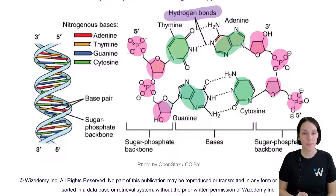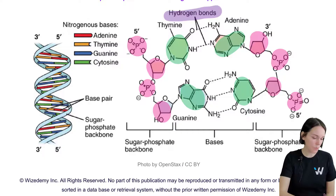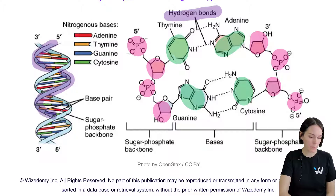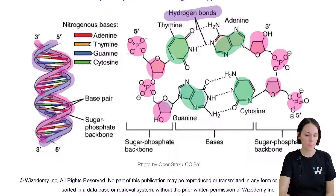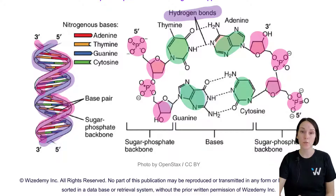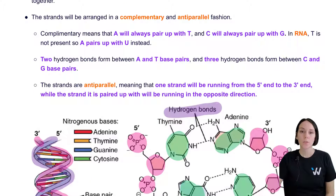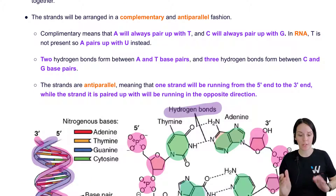Those nitrogenous bases are forming hydrogen bonds between each other, and that's what holds these two strands together. If we look at the double helix structure on the left, you can see the two strands, each with a phosphate-sugar backbone. Pointing inward we have the nitrogenous bases forming the rungs of that ladder, hydrogen bonding with each other.